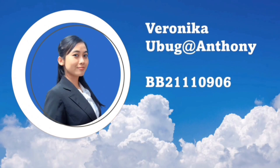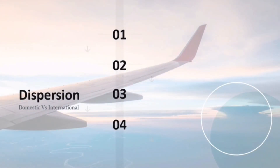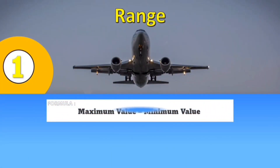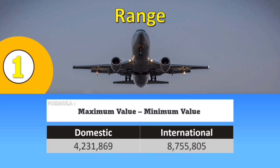Hello, I am Veronica Ubuk Anthony with matrix number BB2110906. Today I will be presenting on dispersions between domestic and international. There will be four measurements for dispersion. The first is range, the second is mean absolute deviations, the third is variance and standard deviations with emphasis on standard deviations, and lastly the coefficient of variation. Range is calculated as the difference between the maximum and minimum value. Our group found that domestic was the lowest at 4,231,869 passenger traffic and international was 8,755,805 passenger traffic.